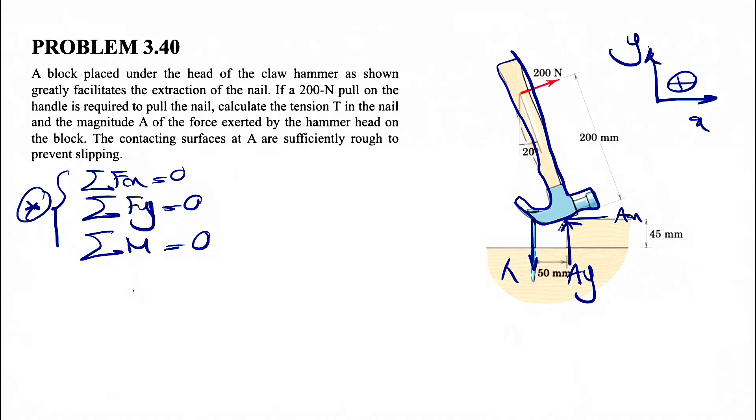We have the most unknowns at point A, so it makes sense to start with finding the moment about point A. Counterclockwise is positive as always. And based on the 2D shortcut, we can basically try to resolve this force in X and Y component.